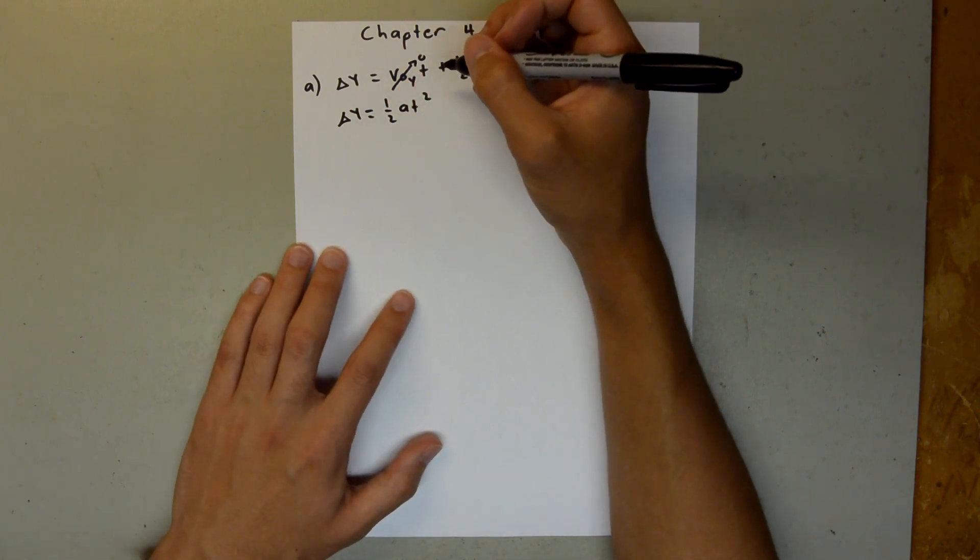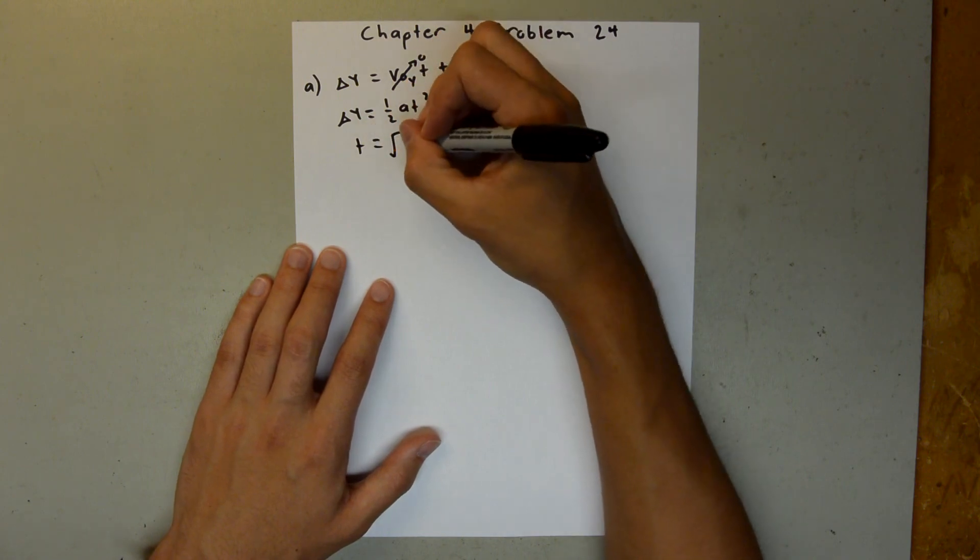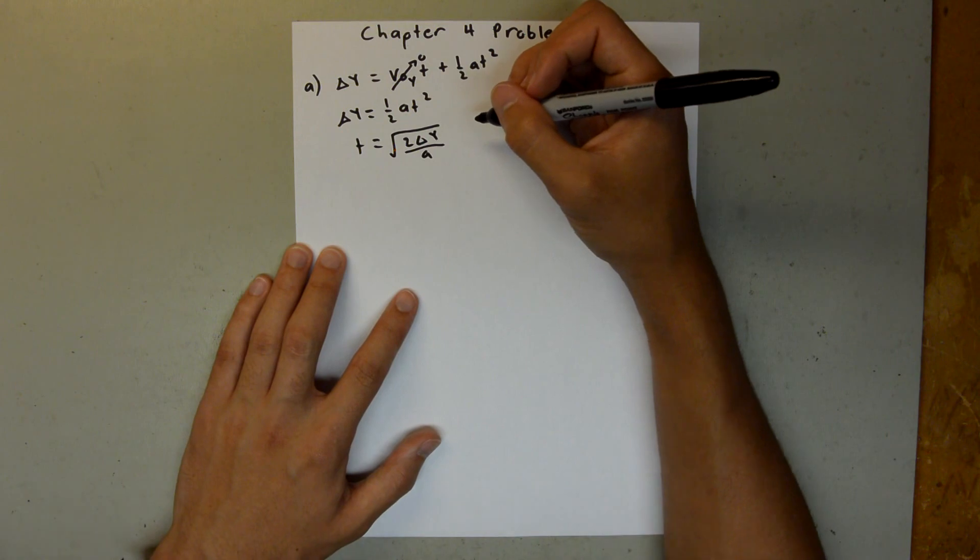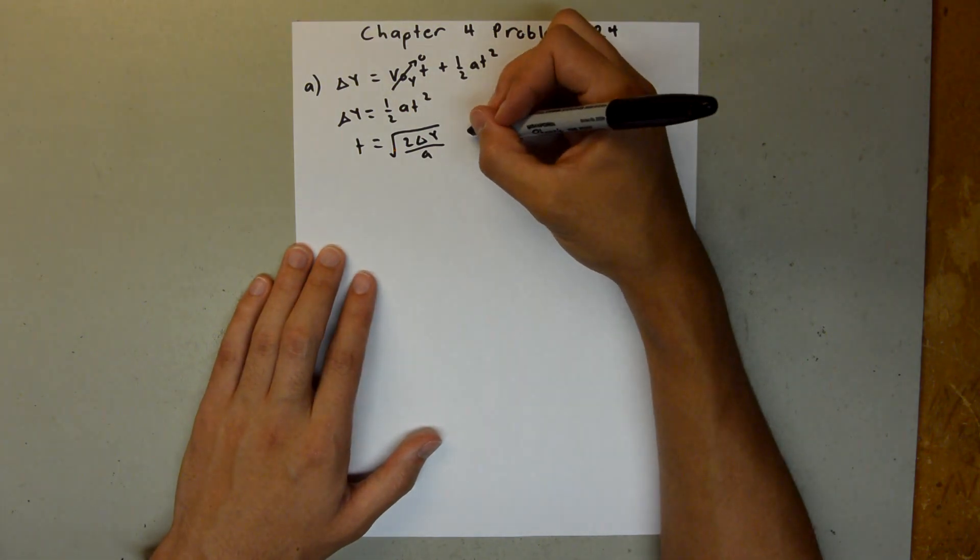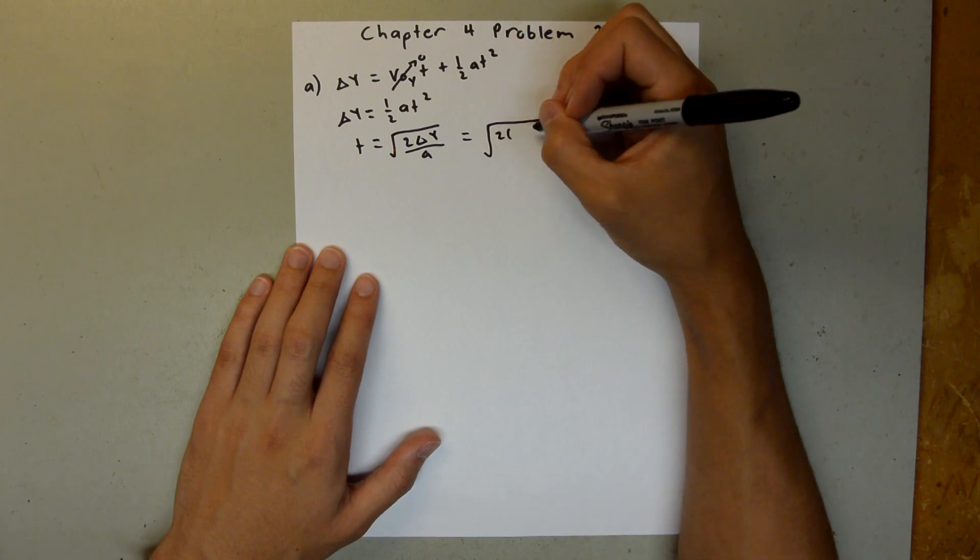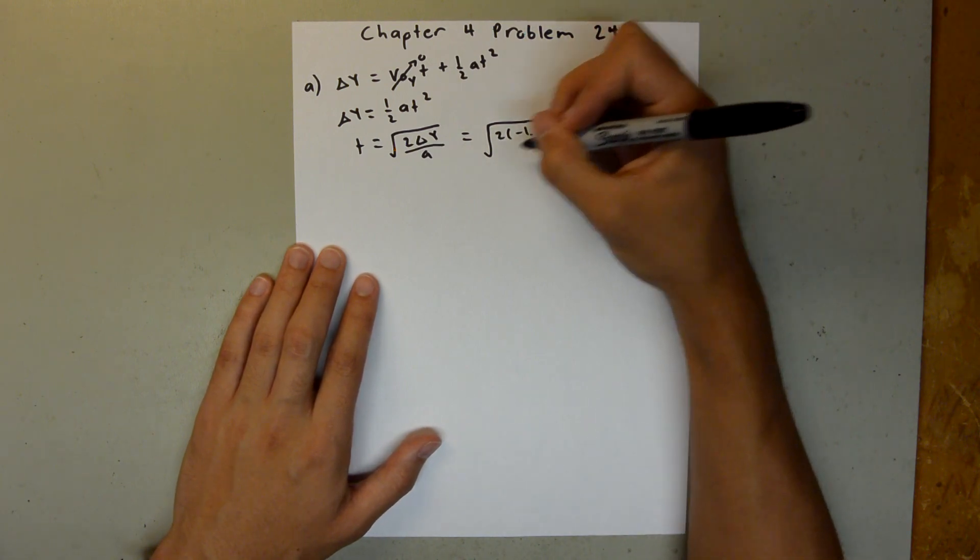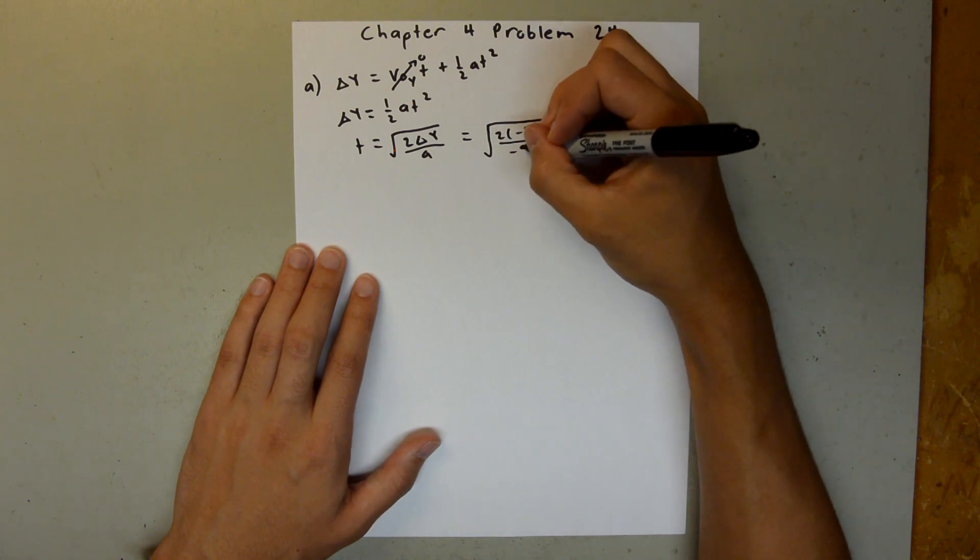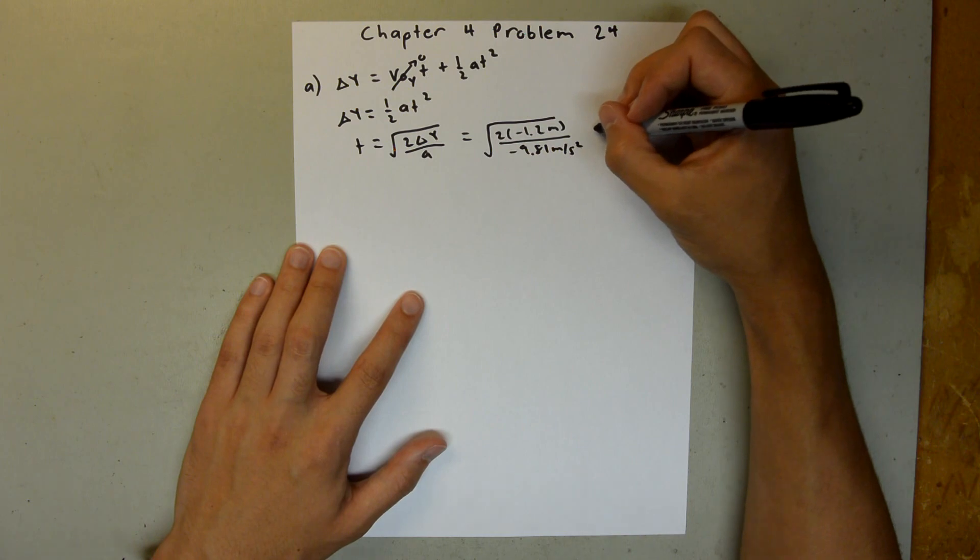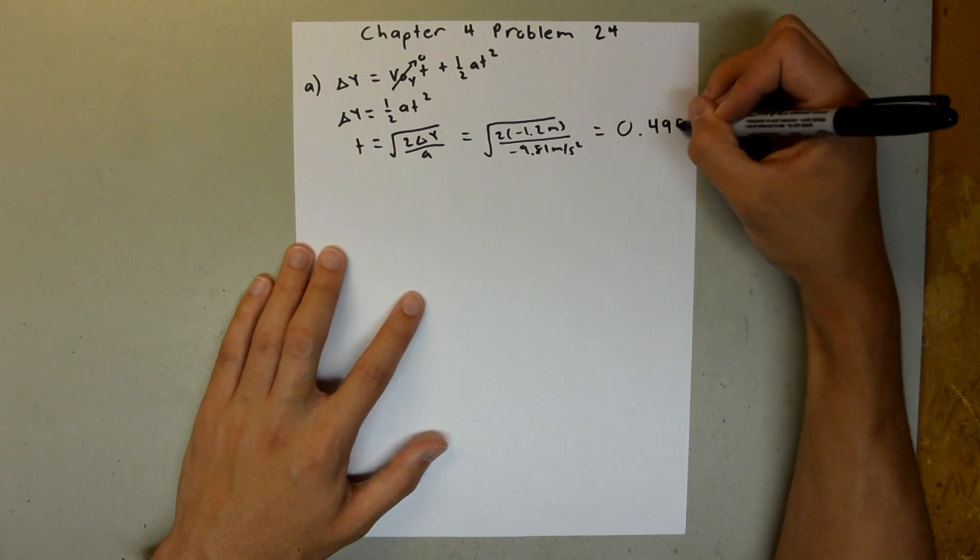And then we can rearrange this for time and say t is equal to the square root of 2 delta y over a. And all those values we were given in the problem, so this is equal to the square root of 2 times negative 1.2 meters over negative 9.81 meters per second squared. And when you plug that into your calculator, you should get 0.495 seconds.